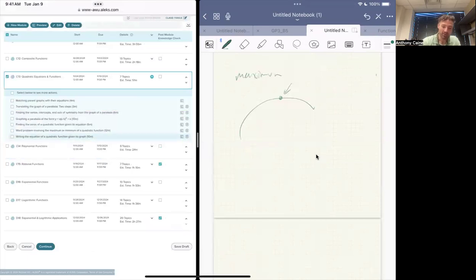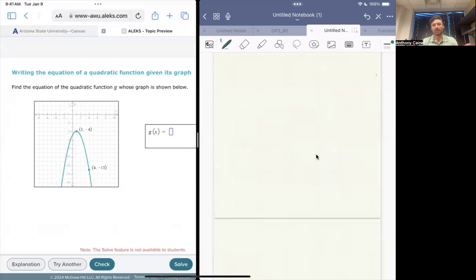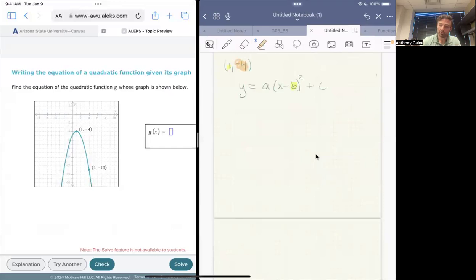Write an equation given its graph. By now, I was hoping that you'd catch on in the form that these graphs have. They all looked like there was some number and then x minus another number squared plus another number. Now the vertex. In this problem, my vertex is one and negative four. That one tells you what this value is. The minus four tells you what this value is. So we now have y is equal to some number x minus one squared minus four, because plus negative four is the same as minus four.